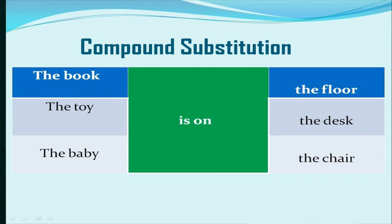For example: 'The book is on the floor,' 'the book is on the desk,' 'the book is on the chair,' and so forth with 'the toy' and 'the baby.' You can also frame your own substitution tables using words like 'is over,' 'is under,' 'is upon,' and so on and so forth.